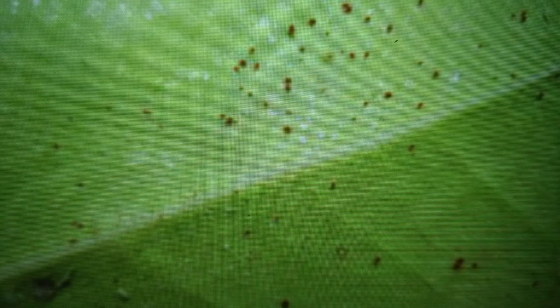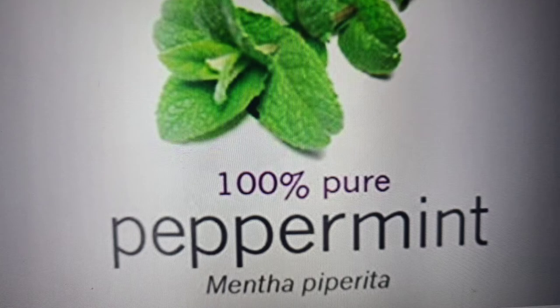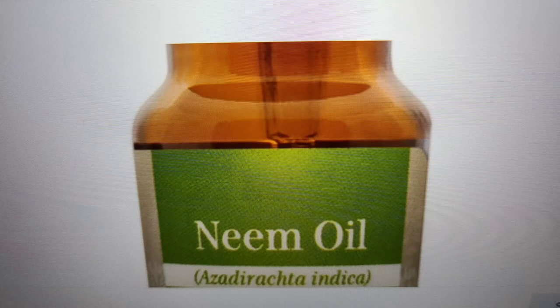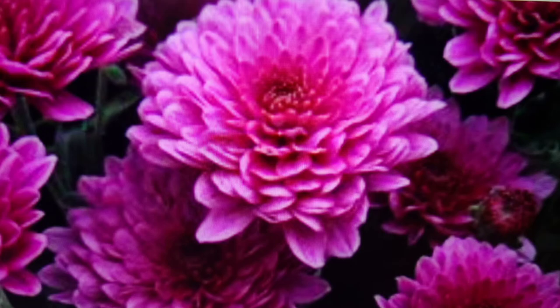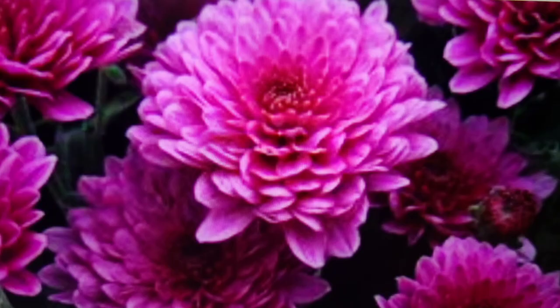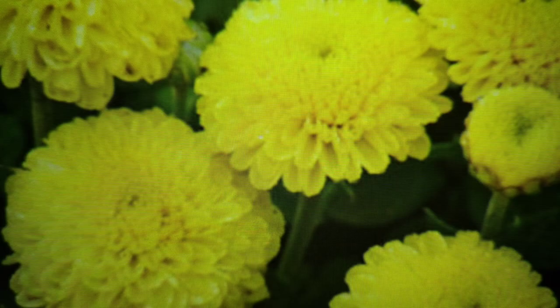You can treat spider mites with peppermint oil, neem oil, diatomaceous earth, crushed eggshell, or potassium salt. You can also use chrysanthemum leaves or flowers, crushed and soaked in water for 24 hours, then sprayed onto the plant. Neem oil and peppermint oil inhibit the growth of pests, whereas diatomaceous earth and potassium salts cut through their waxy layer and dehydrate them.